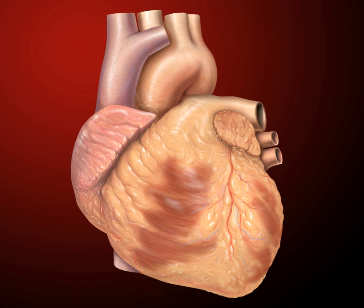The right ventricle tapers into the pulmonary trunk, into which it ejects blood when contracting. The pulmonary trunk branches into the left and right pulmonary arteries that carry the blood to each lung. The pulmonary valve lies between the right heart and the pulmonary trunk.